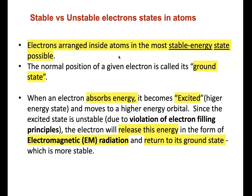When an atom absorbs energy, like thermal or heat energy, it becomes excited — it now has more energy than the ground state. So it has to jump one quantum, two quanta, or more above. That state is unstable because it violates the three electron filling rules we are going to learn about.